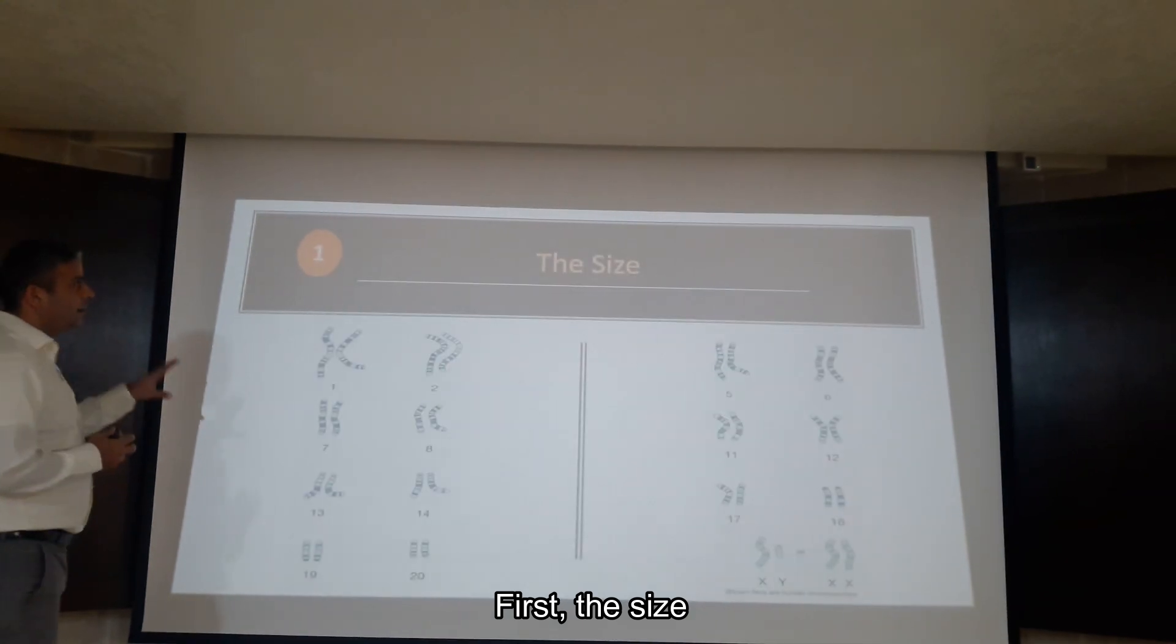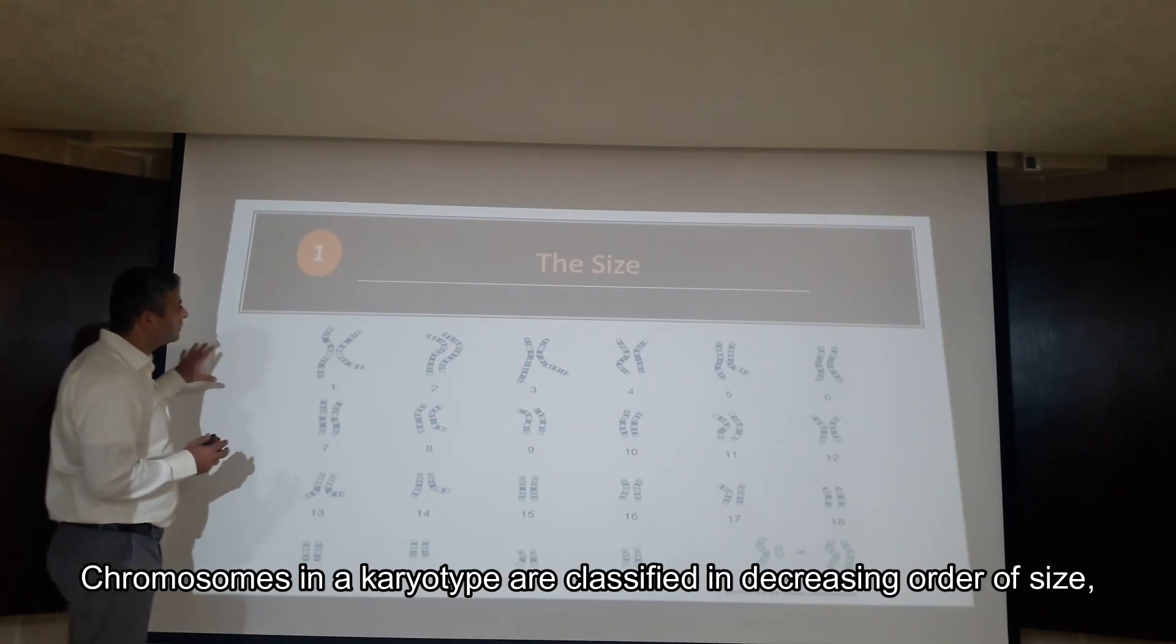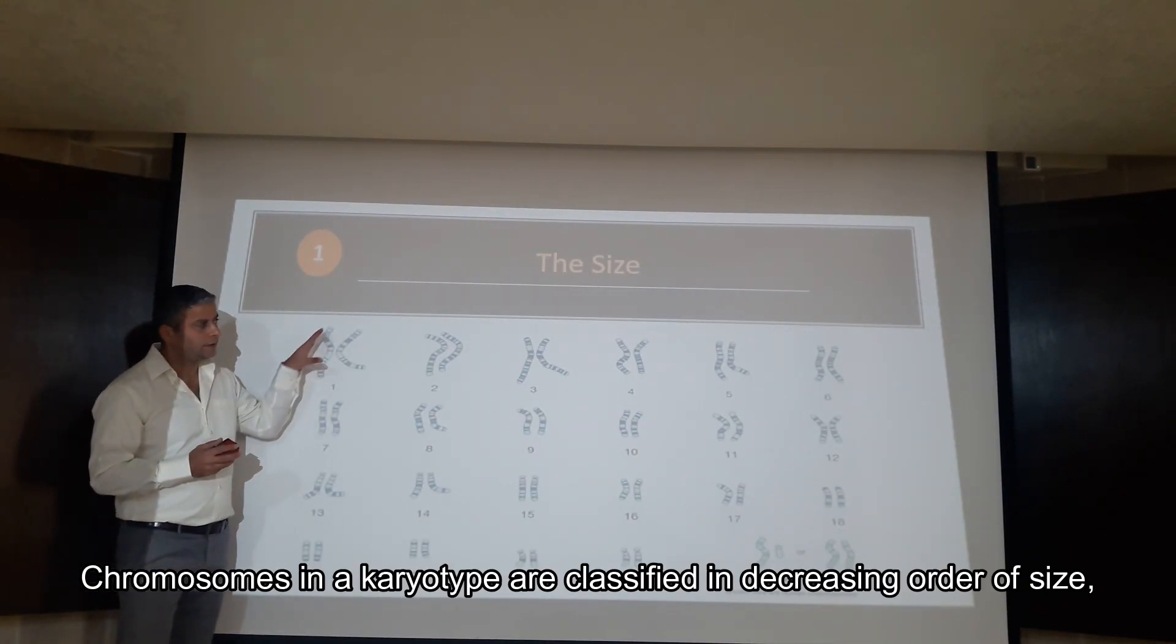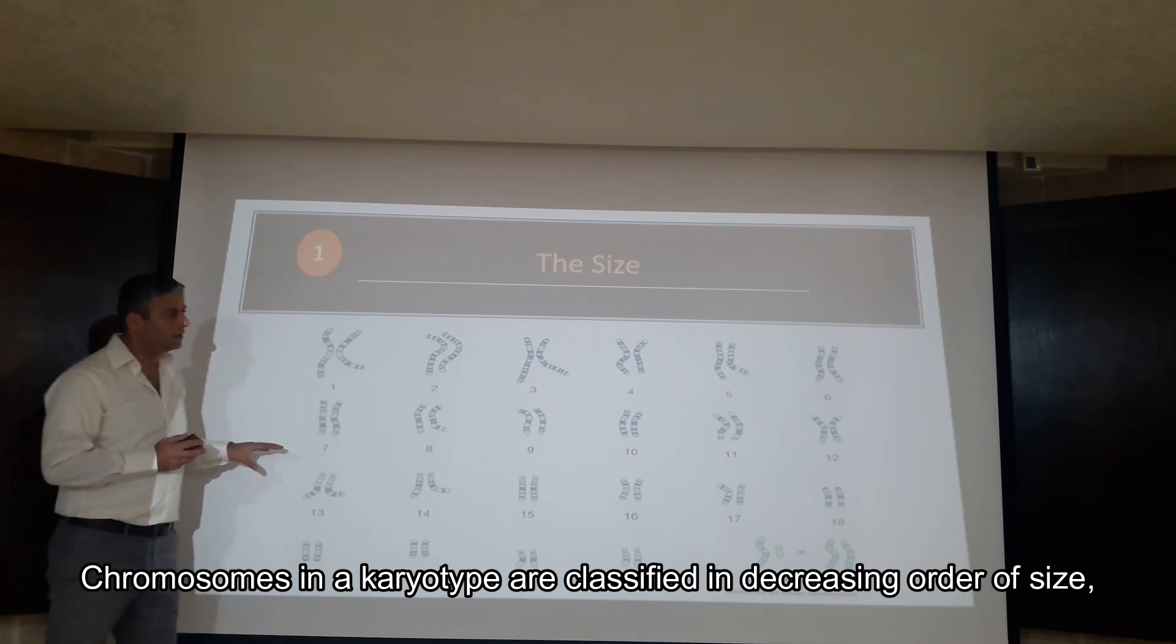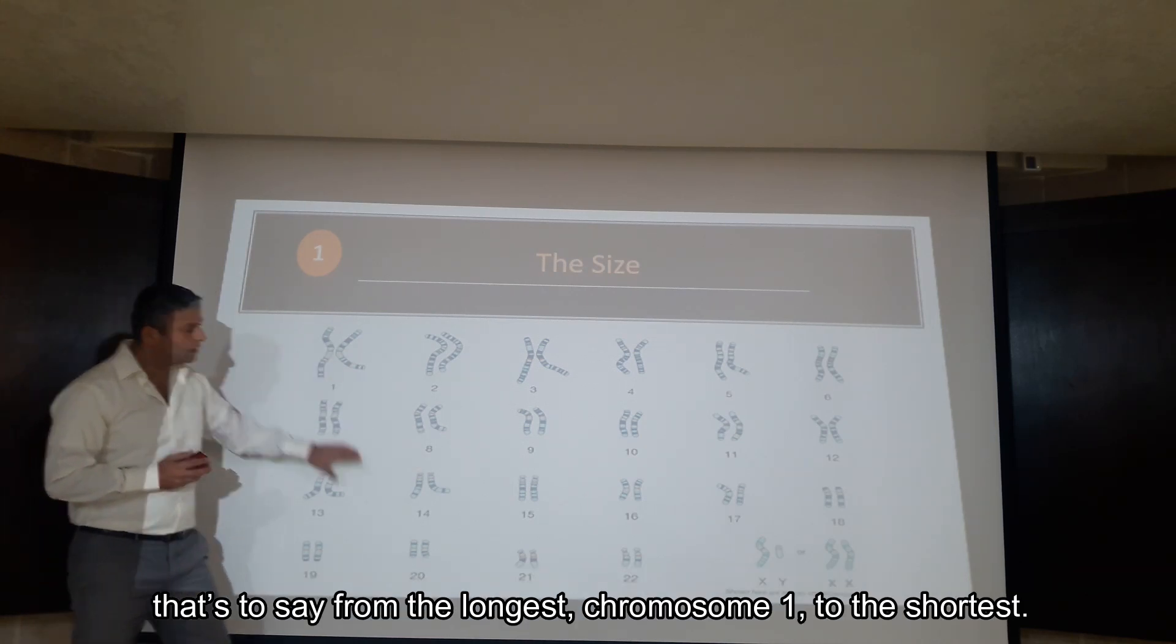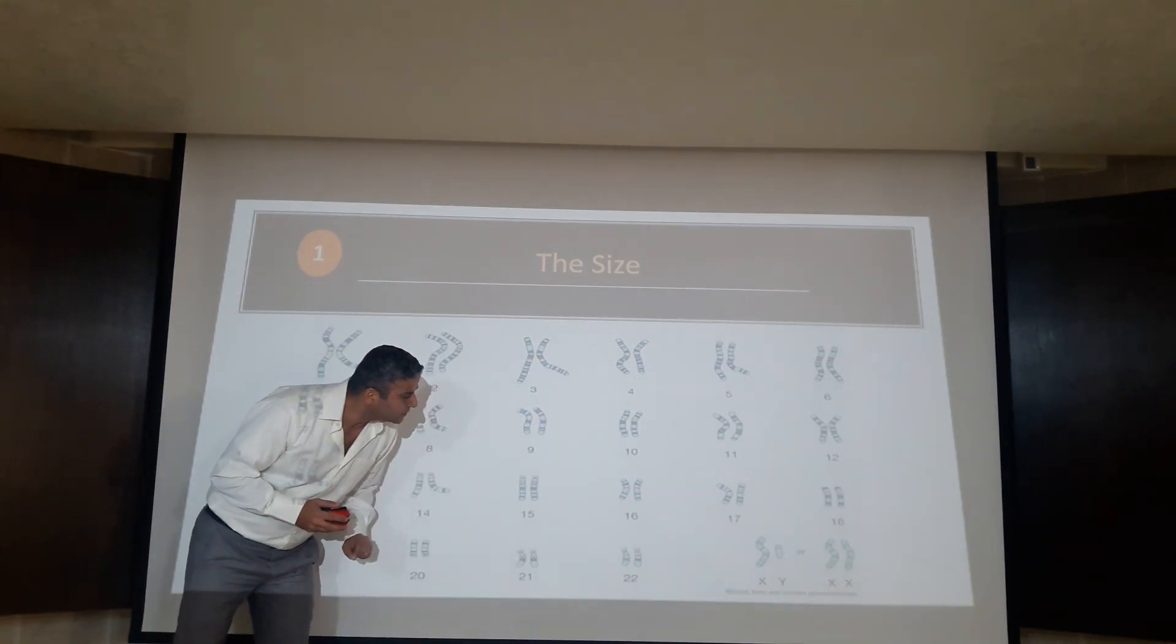First, the size. Chromosomes in karyotypes are classified in decreasing order of size. That's to say, from the longest, chromosome 1, to the shortest, as we see here.